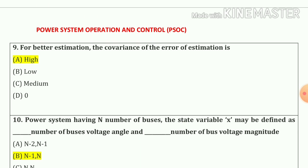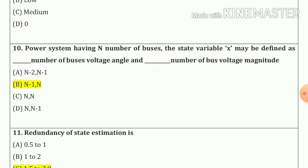Question number 9: For better estimation, the covariance of the error of estimation is high. Option number a. Question number 10: For a power system having n numbers of buses, the state variable x may be defined as (n minus 1) numbers of bus voltage angle and n numbers of bus voltage magnitude. So our answer is option number b: (n−1, n).